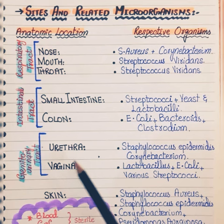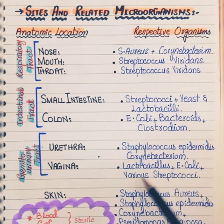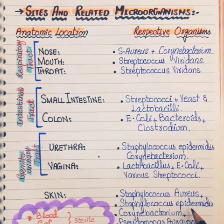In the genitourinary tract, normal flora are present in the urethra and the vagina. In the urethra we have Staphylococcus epidermidis and Corynebacterium. In the vagina we have Lactobacillus, E. coli, and various Streptococcus. In the skin we have Staphylococcus aureus, Staphylococcus epidermidis, Corynebacterium, Pseudomonas aeruginosa, and yeast.